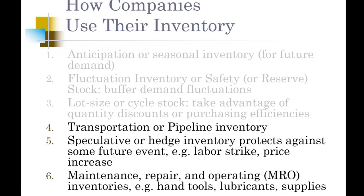With speculative inventory, you are anticipating an event to occur. A perfect example is generators for hurricanes — we're speculating that hurricanes will knock out power, so we're going to purchase generators in advance. That's a common practice for Home Depot and Lowe's in the South, in Florida — during hurricane season, they stock up on generators. That's just one example of that type of inventory.